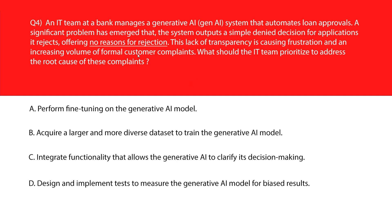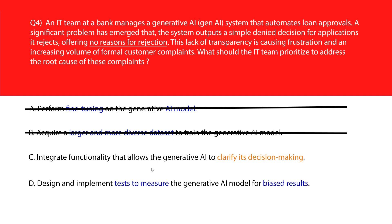Now let's look at this question about providing reasons for rejection. Option A says perform fine-tuning on the gen AI model. Fine-tuning adjusts model performance but doesn't create transparency for its output — incorrect. Option B says acquire a larger and more diverse dataset to train the gen AI model. A better dataset improves model quality but doesn't make its decisions interpretable — eliminate. Option C says integrate functionality that allows the gen AI to clarify its decision making — let's keep it.